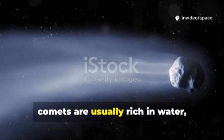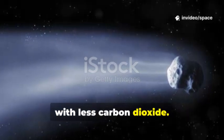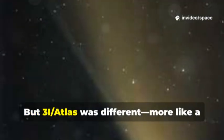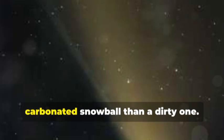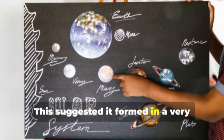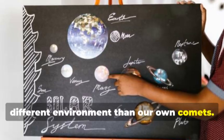In our solar system, comets are usually rich in water with less carbon dioxide. But 3i-Atlas was different, more like a carbonated snowball than a dirty one. This suggested it formed in a very different environment than our own comets. The comet's chemistry was a clue to its distant birthplace.